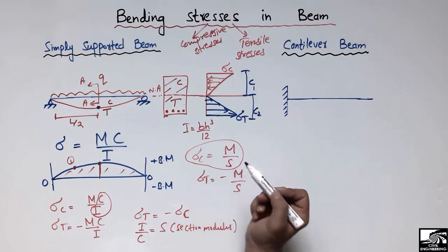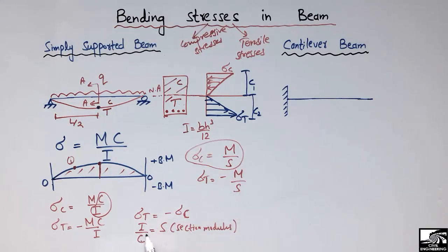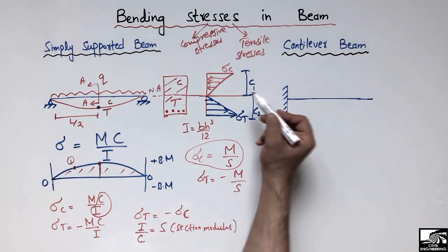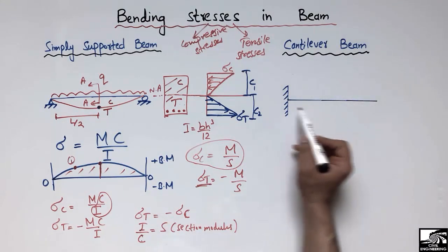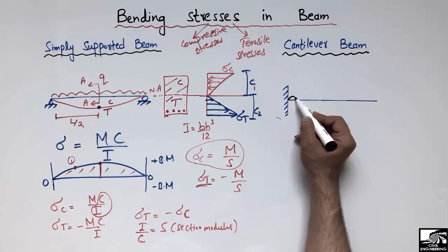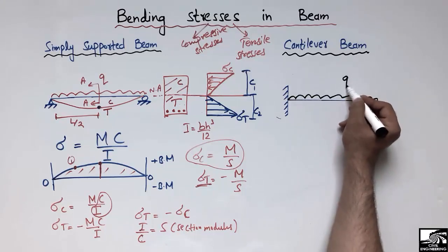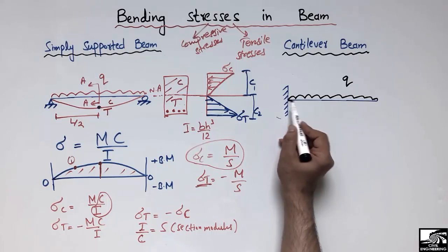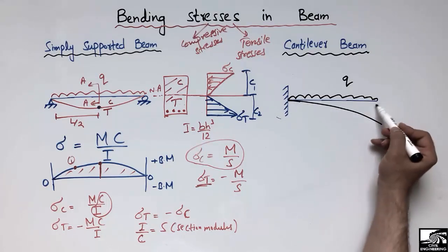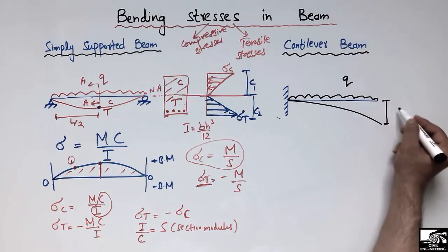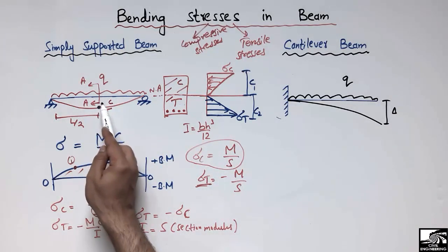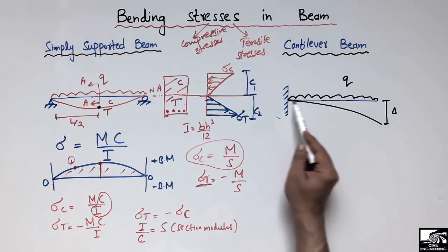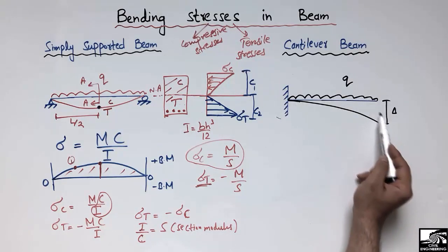The section modulus depends on two values: I, the moment of inertia, and C, the distance from the neutral axis to the extreme fiber of the beam. Now for the cantilever beam — with a fixed support at the left end — if we subject it to a uniformly distributed load Q, it will show deflection with maximum deflection at the free right end, since there is no support there.